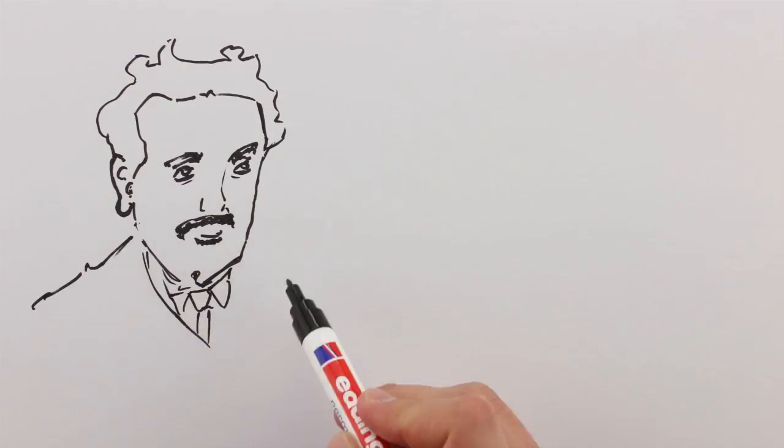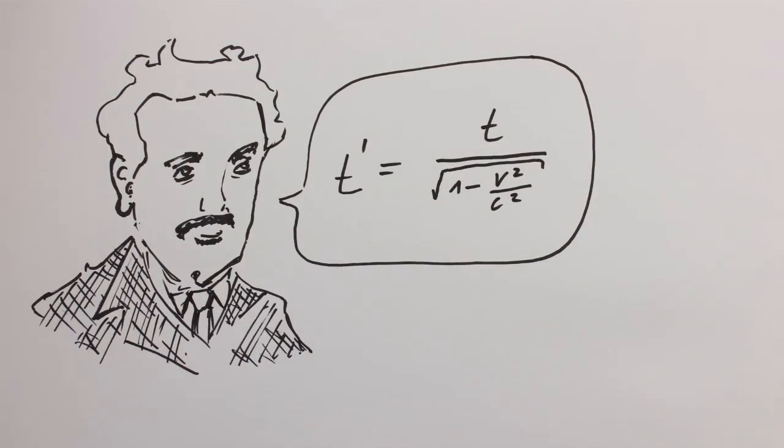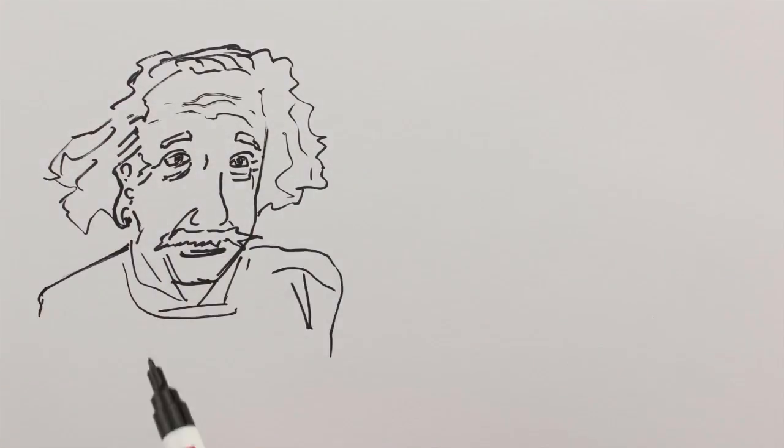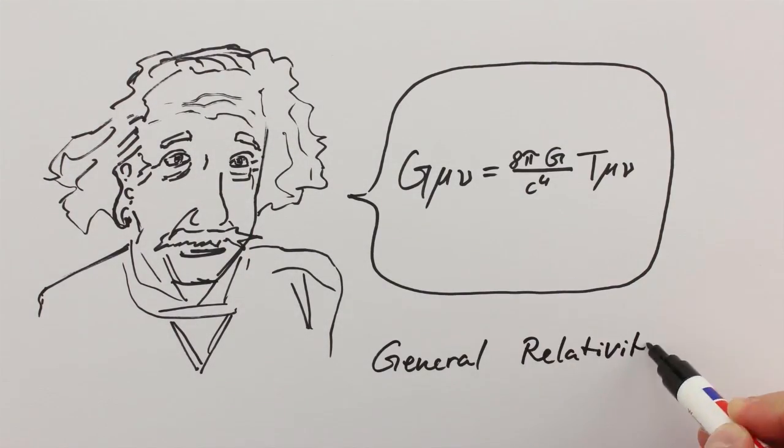In 1907, a young Albert Einstein was looking for a way to extend his special theory of relativity to include acceleration. It took him eight years to come up with a mathematical solution that we know as the general theory of relativity.